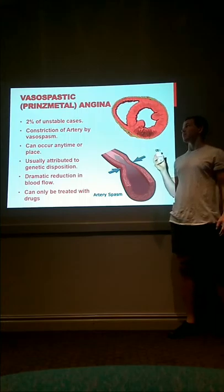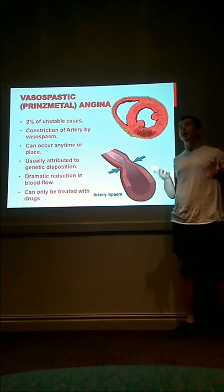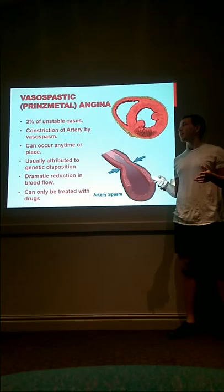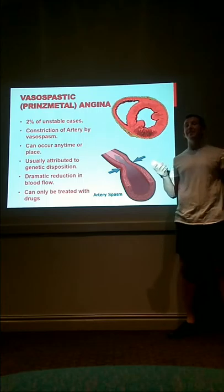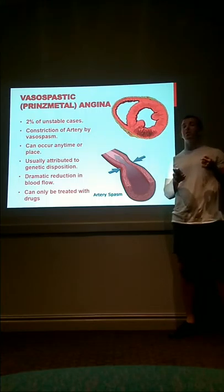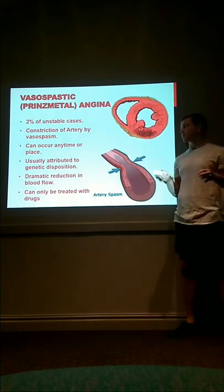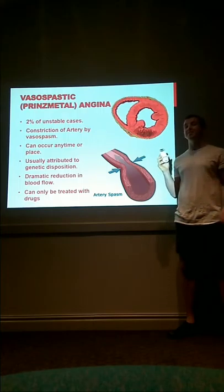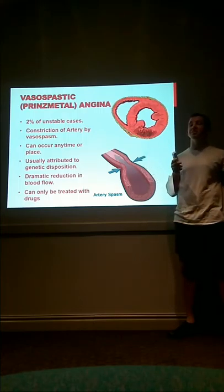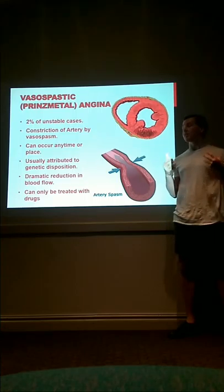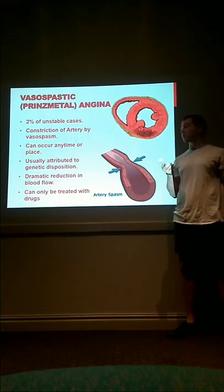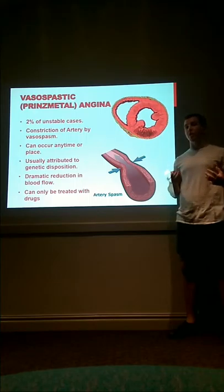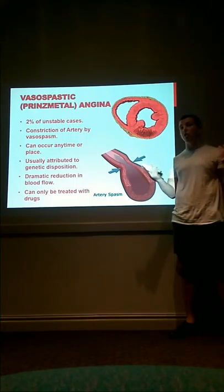Vasospastic, or Prinzmetal angina, is a subtype of unstable angina and involves the constriction of an artery by vasospasm. This can occur at any time or place, and in fact mostly occurs in the early morning hours when the patient is asleep. It is usually attributed to a genetic disposition but can also occur through substances, pharmaceutical drugs, and even illicit drugs. Like all unstable anginas, it involves a dramatic reduction in blood flow, but can only be treated with drugs like vasodilators, for example nitrates.